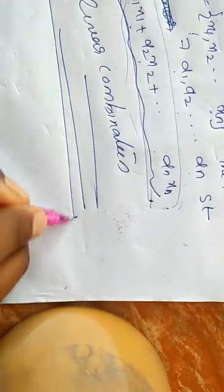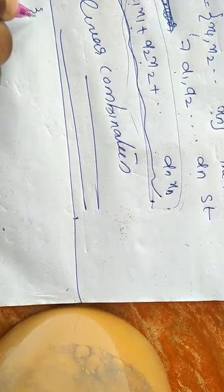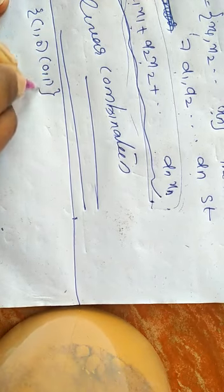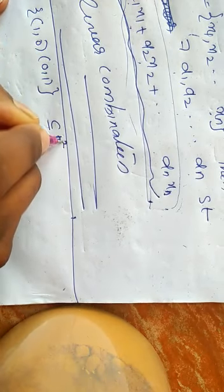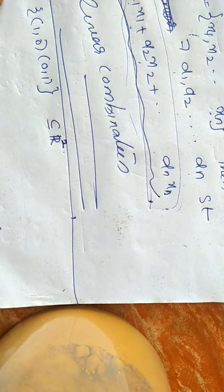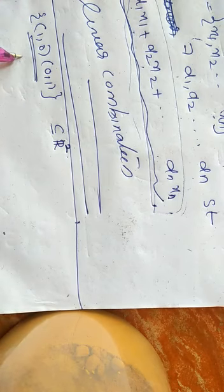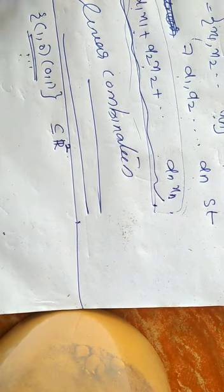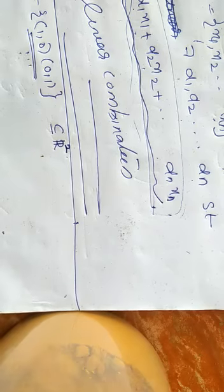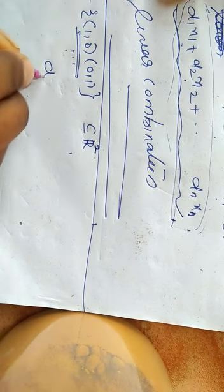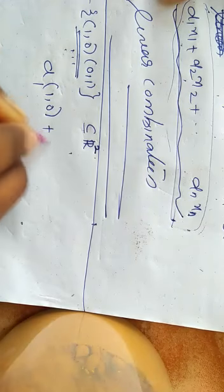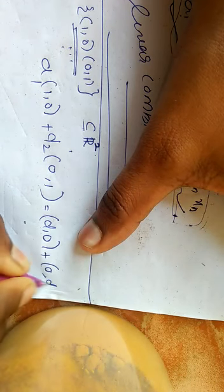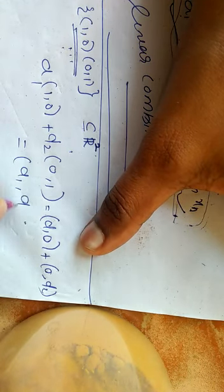For example, we can write down the set S = {(1,0), (0,1)}, which is a subset of R2. Note it is not a subspace because the identity element is not here, but it is a subset of R2. Then we write down alpha 1 times (1,0) plus alpha 2 times (0,1), which equals (alpha 1, 0) plus (0, alpha 2), which equals (alpha 1, alpha 2).